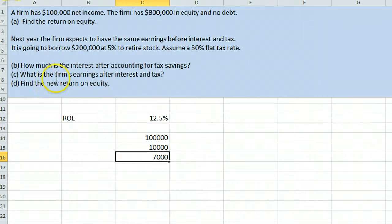It's asking for the firm's earnings after interest and tax. We take the net income that we started with, $100,000, and we're now going to subtract off this interest we're paying. $100,000 minus $7,000 is $93,000 after interest and tax.